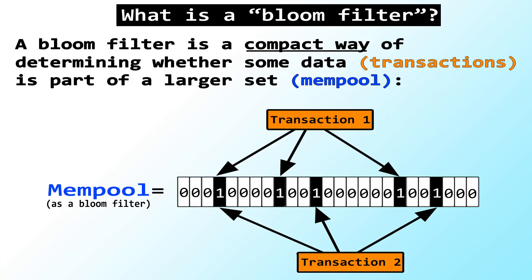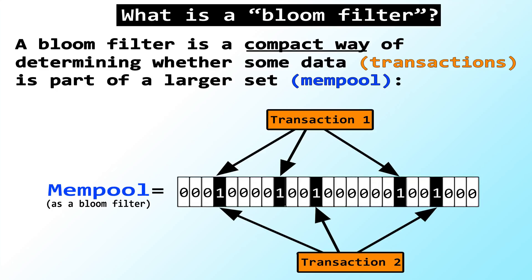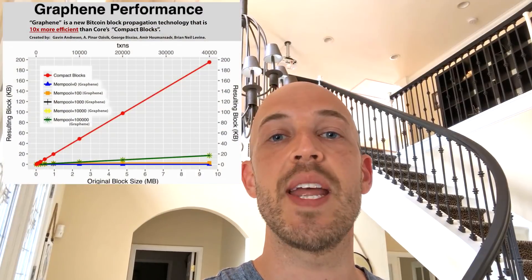A bloom filter is a compact way of determining whether some data — in this case transactions — is part of a larger set of data, in this case a mempool in Bitcoin. You'll see that the transactions, we've just shown two here, are represented in orange. Through some mathematical functions, they change a couple of singular bits in this data set. So instead of having to send the entire transaction, all you have to do is send a couple of bits worth of data for each transaction, which makes it much smaller, resulting in a tremendous reduction in size for data transmission in Bitcoin Cash.